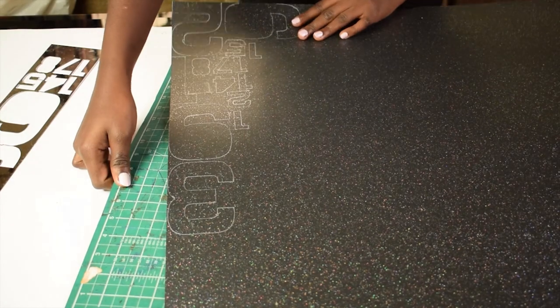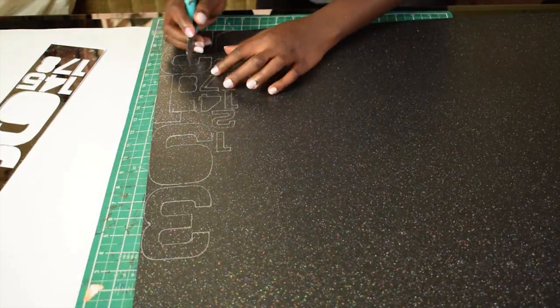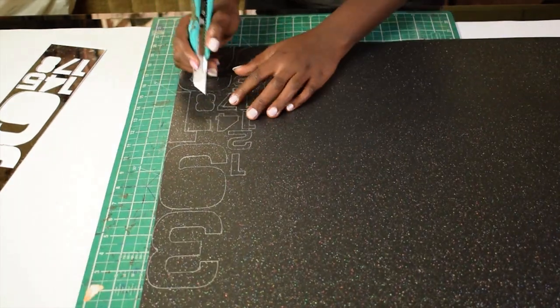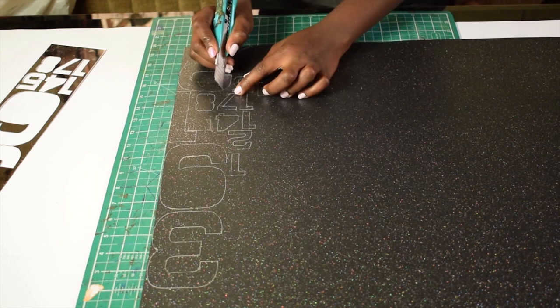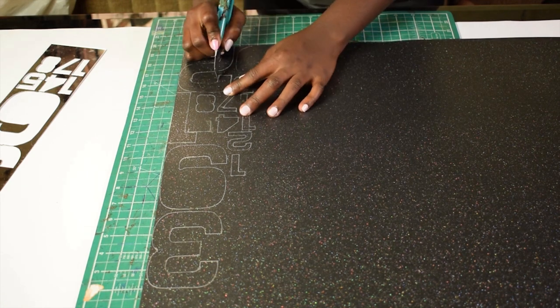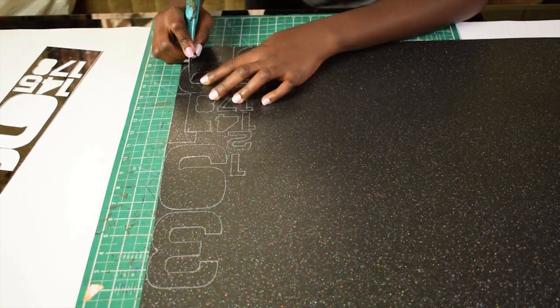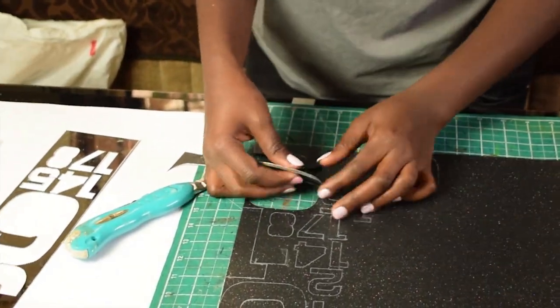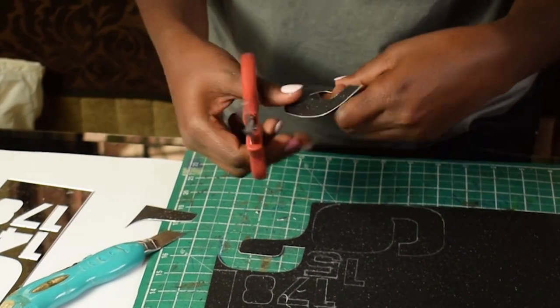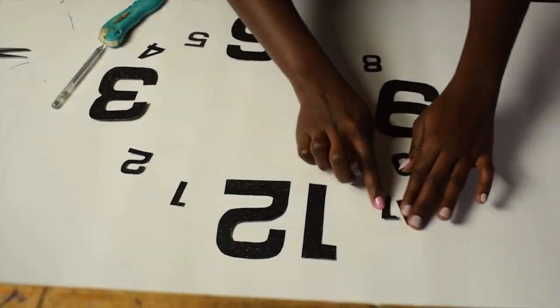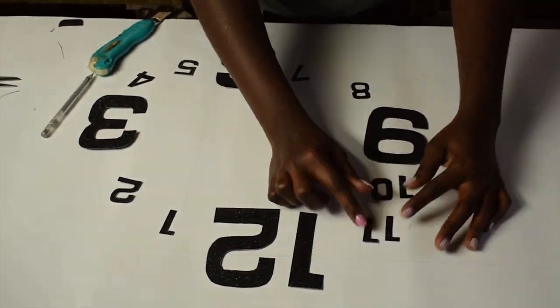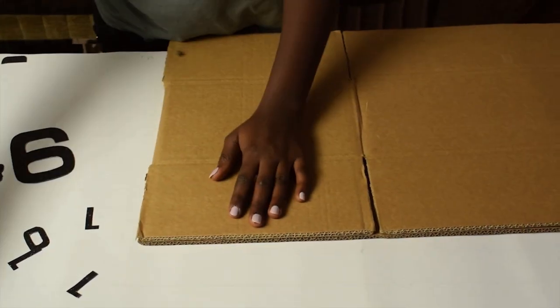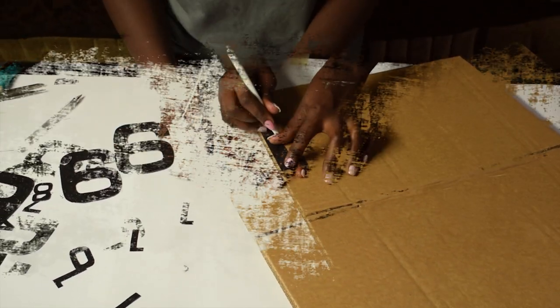If you don't have the stencils, then cut out the numbers using your knife cutter. Arrange them nicely so that you are sure you have all the numbers you need. I use the big font for the numbers 12, 3, 6, and 9, and small fonts for the rest of the numbers forming the clock.